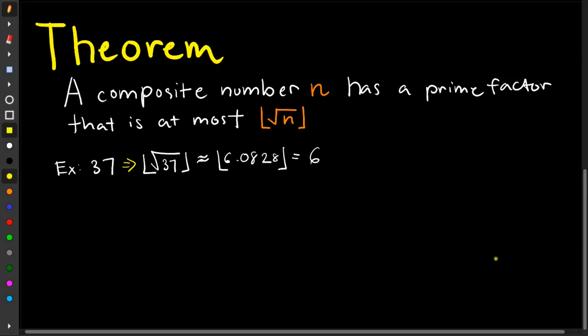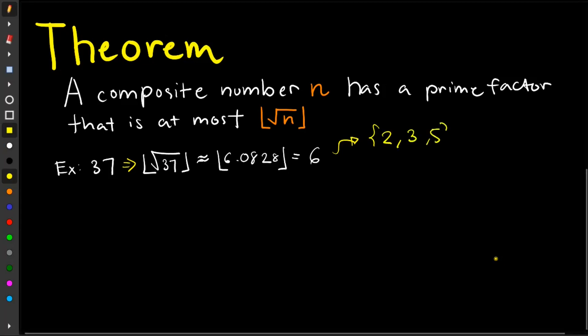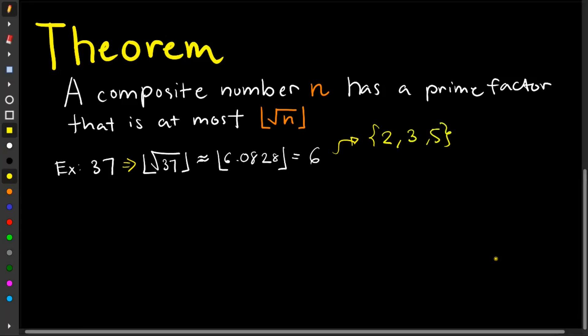So the prime factors that is less than or equal to 6, since we are dealing with at most, are 2, 3, and 5. So we simply check these factors.